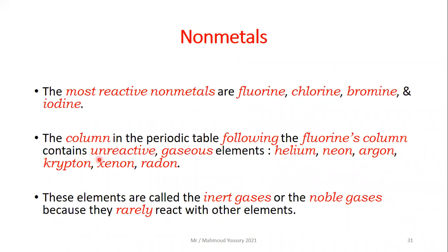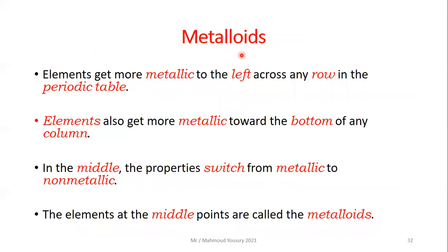Column 18 contains unreactive gaseous elements — helium, neon, argon, krypton, xenon, and radon. These elements are called inert gases or noble gases because they rarely react with other elements.